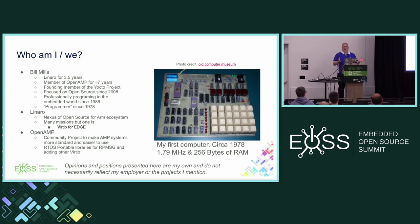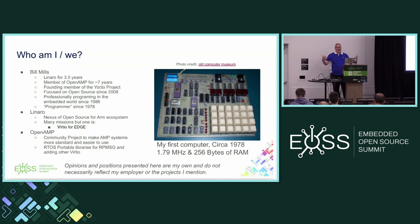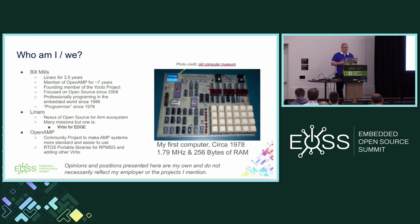A little bit about the OpenAMP project. The goal of the OpenAMP project is to make the programmer's and developer's job easier whenever you're dealing with an AMP system — which could be two OSes, different OSes talking to each other, different CPU cores, or different discrete systems, even if those things are the same.